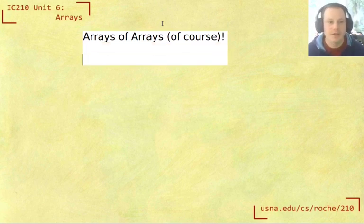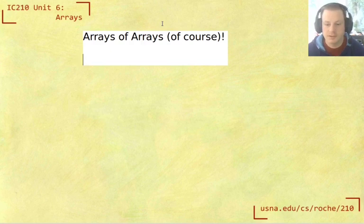And this turns out to be really useful for anything with matrices. If you think about the pixels on your screen, we could organize them as one long list, but we can also organize them as one array for each row of pixels. And that might be more convenient.